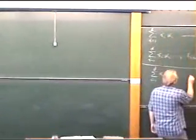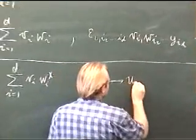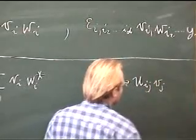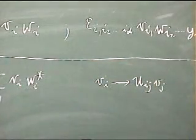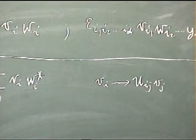So the transformation that I'm going to consider, I'm going to imagine that V_i is allowed to go into U_ij V_j. And in fact, U need not be a real matrix now. It is now allowed to have complex entries.